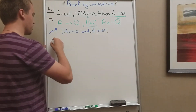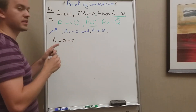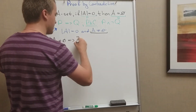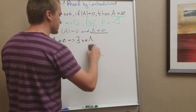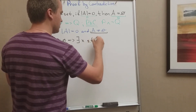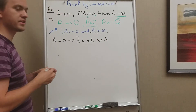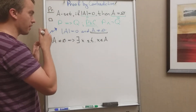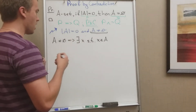Next, we want to unpack the assumption. We know that A is not empty, so what does that mean? It means we can find some element x such that x belongs to A. So we say: there exists an element x such that x ∈ A. Now I want to show a contradiction, and I'll use the inclusion-exclusion principle to do so.